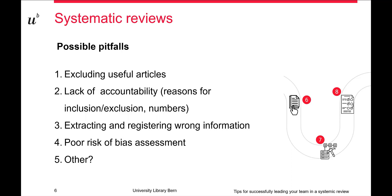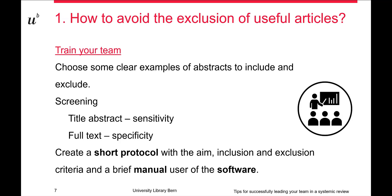How to avoid the exclusion of useful articles. You will see this phrase often: train your team. First, identify the articles that will definitely be part of the synthesis of your systematic review and use them as examples for your team. Share those useful articles with your team. Second, be clear with your team about what the aim is during the different steps of the systematic review.